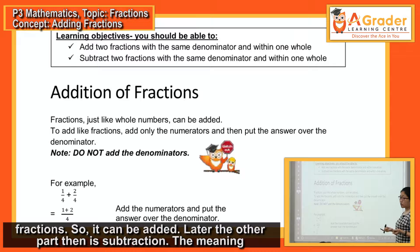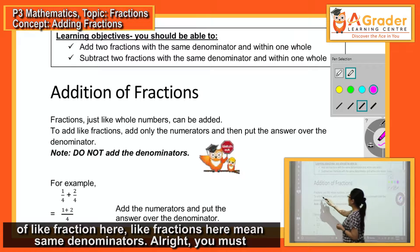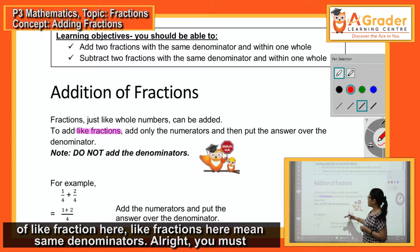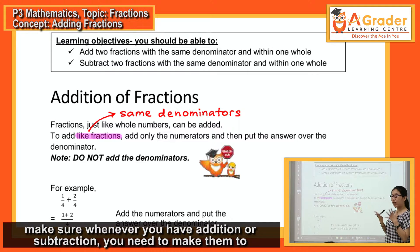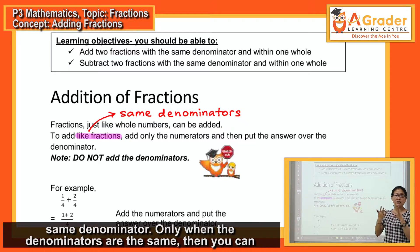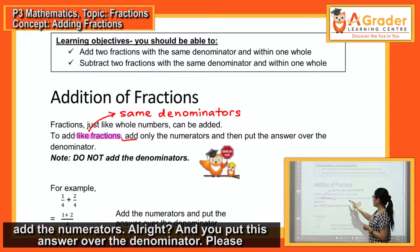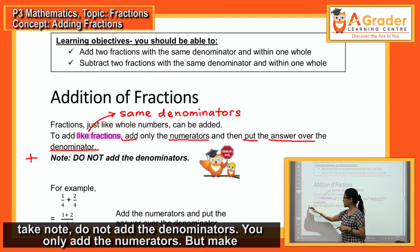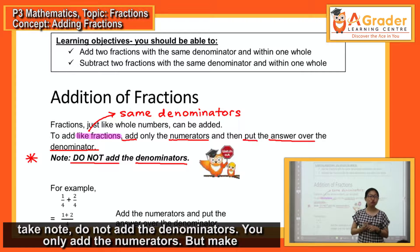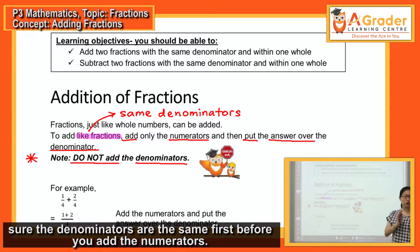It can also be done with subtraction. The meaning of like fractions here — like fractions means same denominators. You must make sure whenever you have addition or subtraction, you need to make them to the same denominator. Only when the denominators are the same, then you can add the numerators, and you put this answer over the denominator. Do not add the denominators — you only add the numerators. But make sure the denominators must be the same first before you add the numerators.